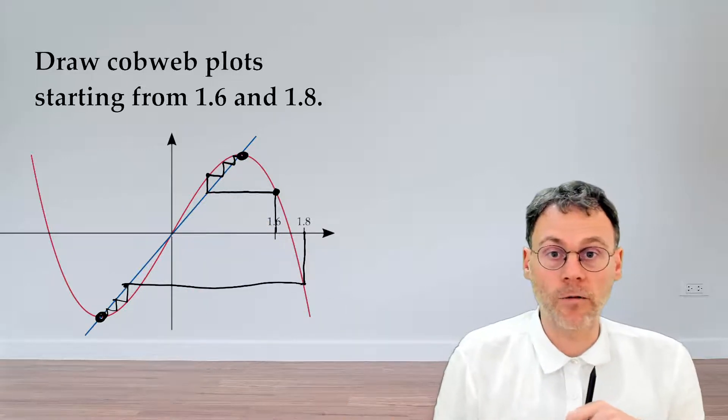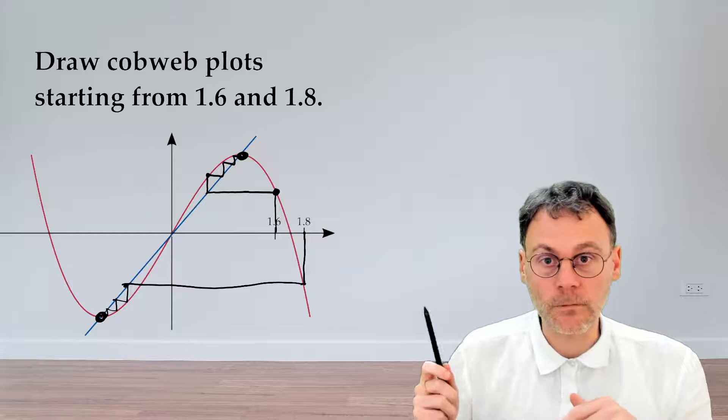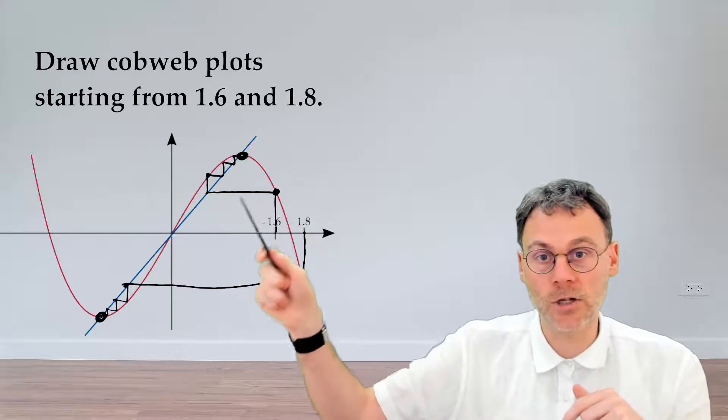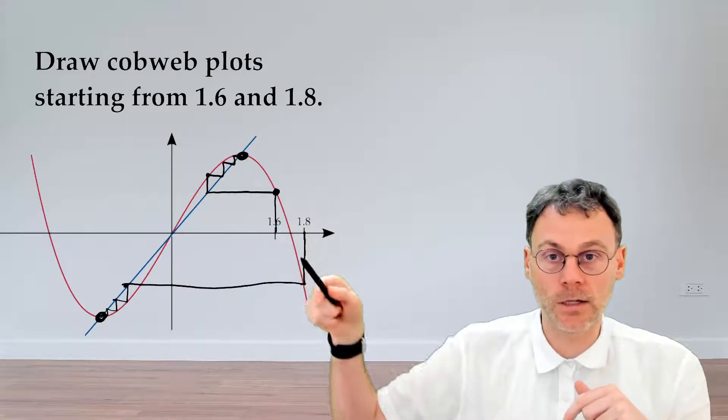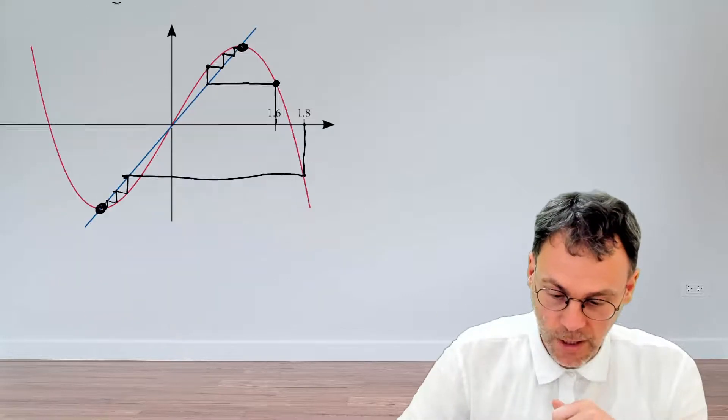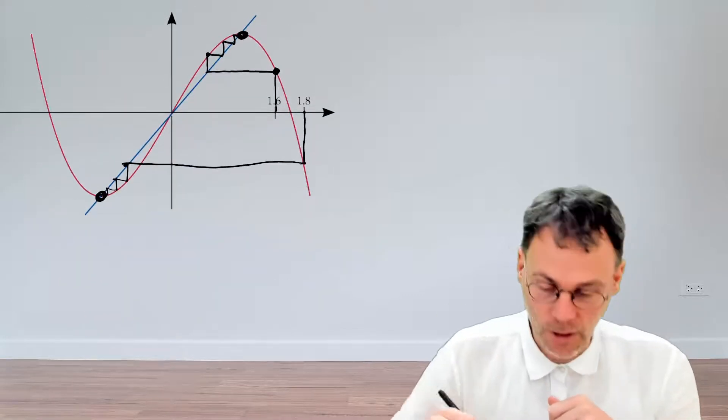Speaking of fixed points, we have three intersections between the line y equals x and f of x. If you want, you can quickly calculate what their numerical values are.